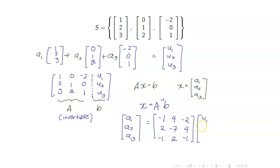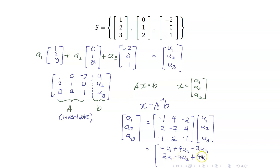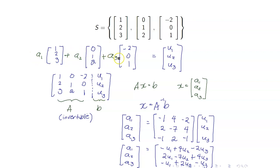So our B is U1, U2, U3, and therefore this is equal to A inverse times B. This is saying that whatever U1, U2, and U3 are, we can always find the constants A1, A2, and A3, and of course these constants are going to be unique for every vector.